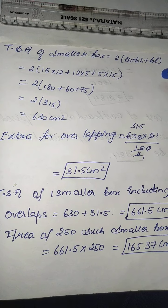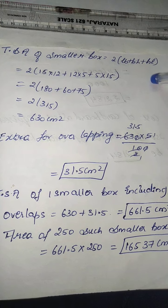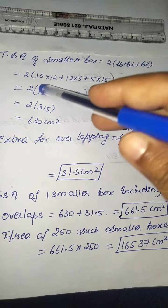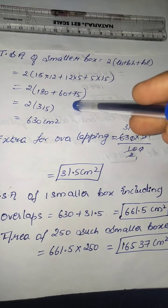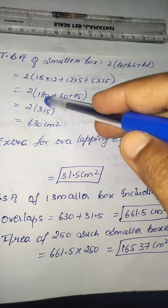Now coming to the TSA of the smaller box, I know the formula. I am going to substitute the values. And 15 into 12 becomes 180, 12 into 5 becomes 60, 5 into 15 becomes 75. On adding all the three values, I am going to get 315.